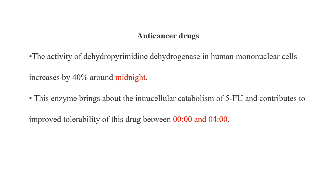For anti-cancer drugs, the activity of dihydropyrimidine dehydrogenase in human mononuclear cells increases by 40% around midnight. This enzyme brings about the intracellular catabolism of 5-fluorouracil and contributes to improved tolerability of this drug between 12 AM and 4 AM. Therefore, the best time to administer 5-fluorouracil is midnight to 4 AM.